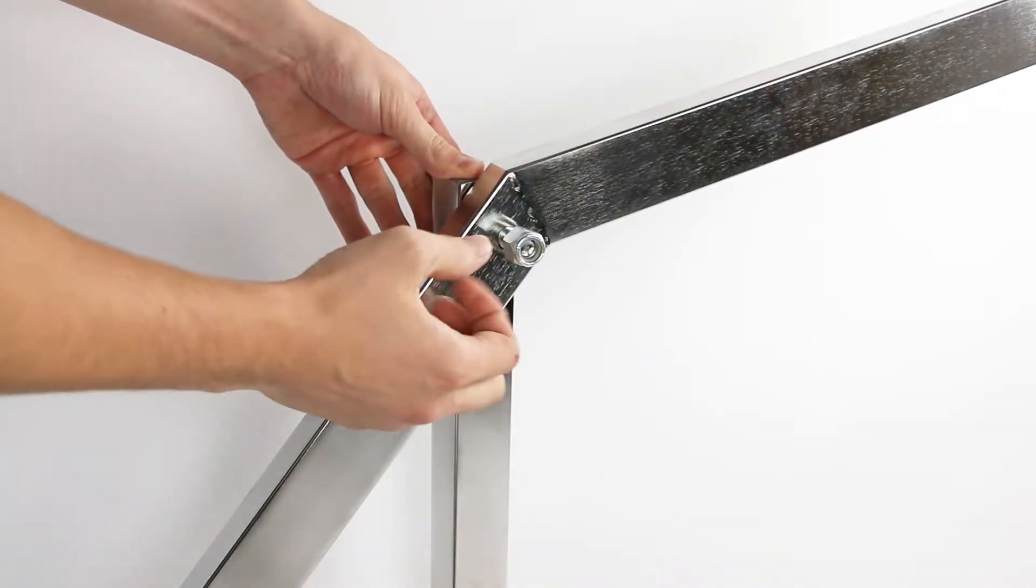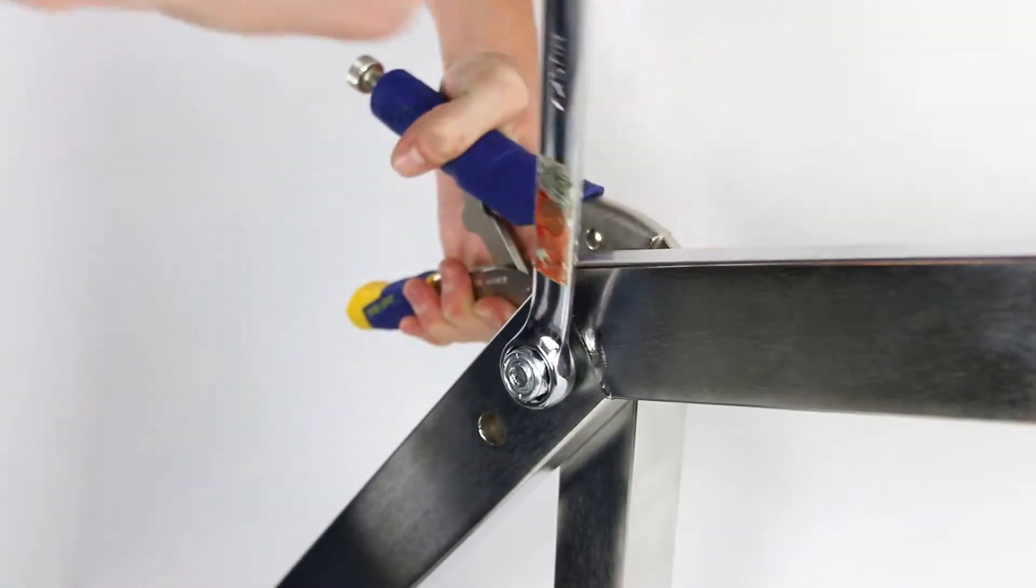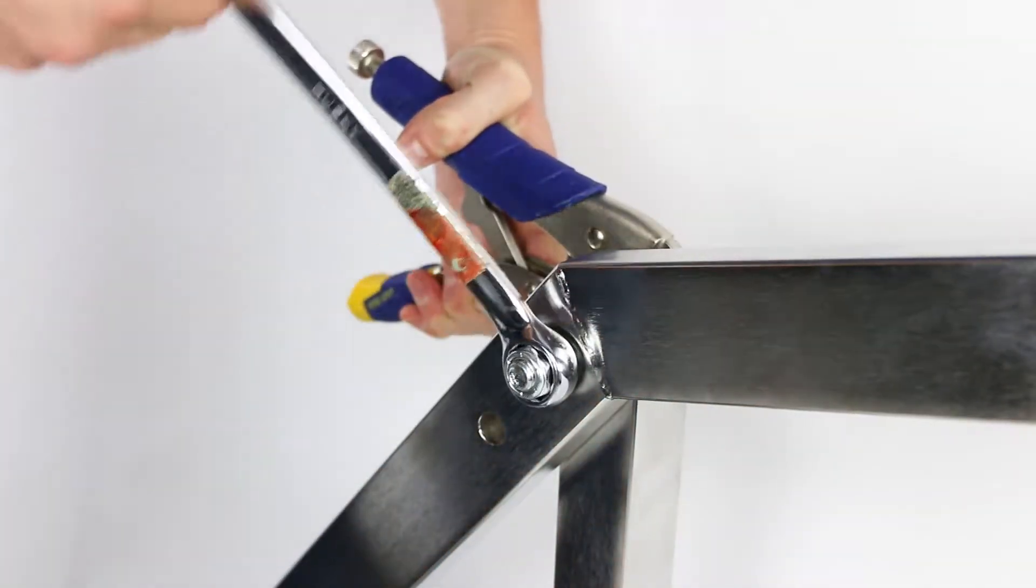Tighten each large nut snugly, but not so tight that the arms bind when pivoting. Lubricate this area with oil or WD-40.